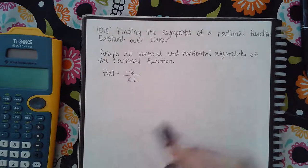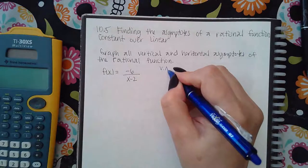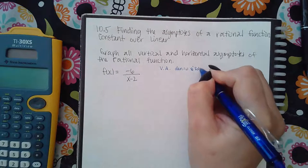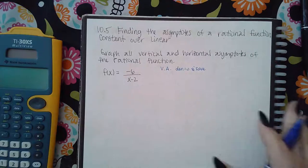Okay, so for vertical asymptotes, that's the easy one. You just take your denominator equal to zero and solve, and that's how you find your vertical asymptotes.